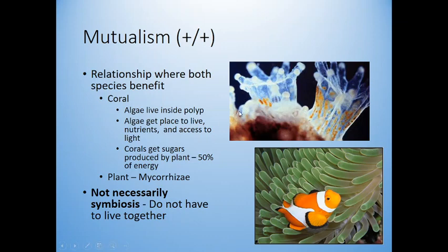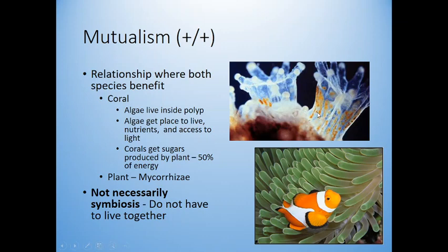Looking at coral: corals are actually tiny little jellyfishes with a calcium shell around them. Inside the jellyfish is algae that lives there. The algae gets a place to live and gets nutrients from the prey the jellyfish brings in, plus access to light. The coral gets the sugars produced by the algae through photosynthesis — about half of the calories the jellyfish needs come from the algae.